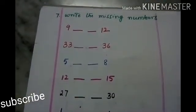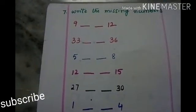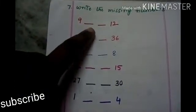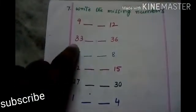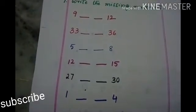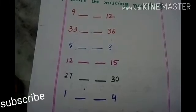Next, write the missing numbers. We have to write the missing numbers. 9 what comes? 10. 11. 33? 34. 35. 36. Like this you have to write the missing numbers.